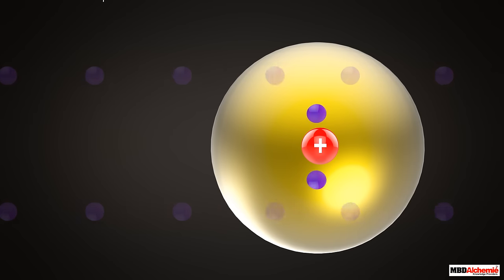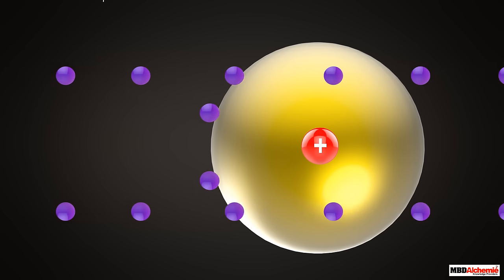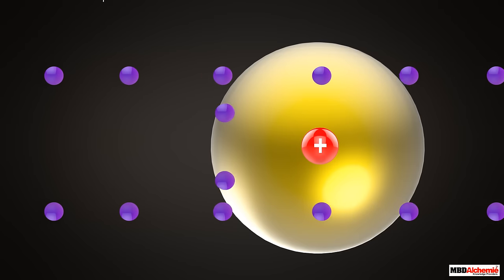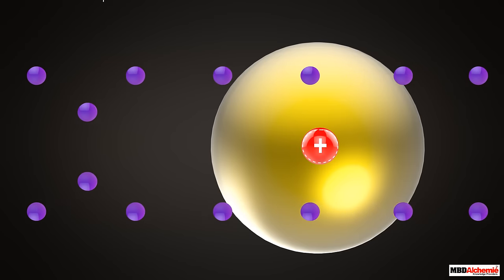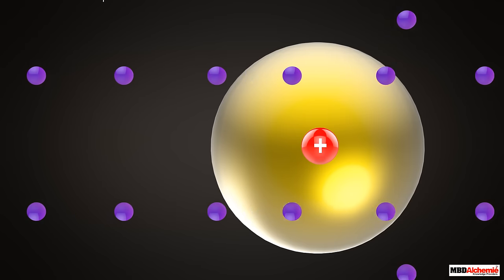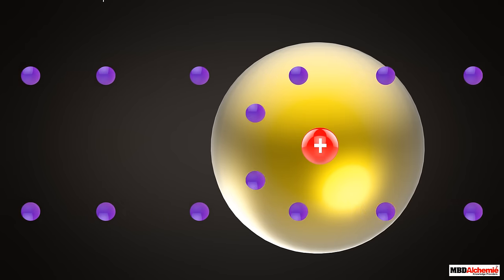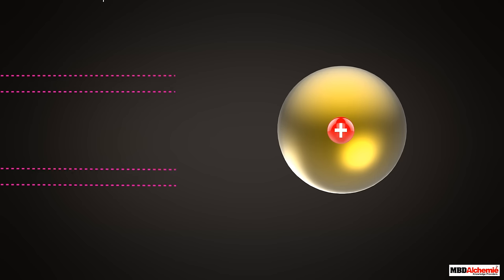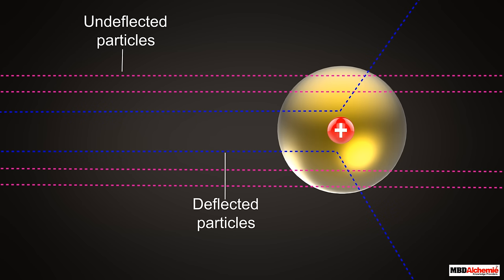The few particles that rebounded back indicate that all the positive charge of the atom was concentrated in a very small volume in the center. Rutherford named this positive center of the atom as a nucleus. Looking at the proportion of the particles undeflected, deflected, and rebounded, and based upon some calculations, Rutherford concluded that most of the mass of an atom is concentrated in its nucleus.